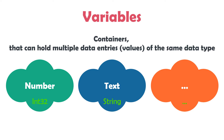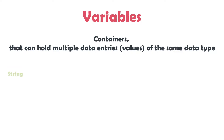In UiPath we have the following data types as standard. The first one is string — we use it to store text, for example ABC. The next one is integer, to store integer values, for example the number 1. The next one is boolean, to store boolean values. Here we only have two options: either true or false.